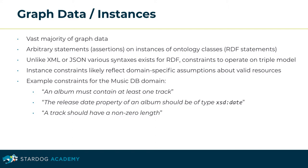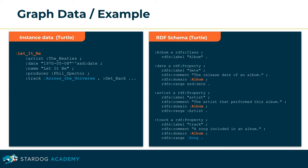The bulk of graph data are statements on instances of a schema. Compared to XML or JSON languages, many alternative syntaxes exist for RDF. Constraints on graph data in general would operate on an abstract RDF triple model. Constraints on the instance data in particular will most likely reflect domain-specific assumptions about what is a valid resource. In the music database domain, one may require an album to contain at least one track, the release date of an album be of type XSD date, or a track to have a non-zero length. The snippet of RDF instance data on the left leverages the model defined by the RDF schema on the right.